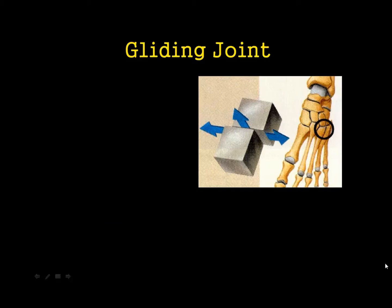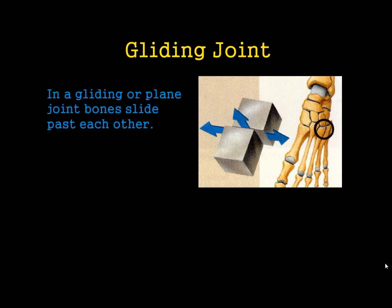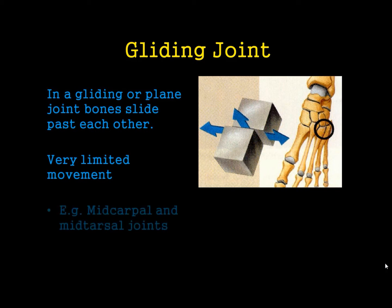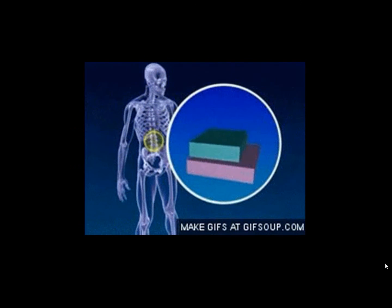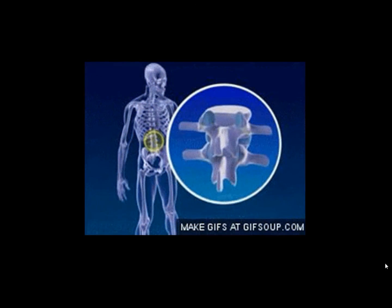We also have the gliding joint. The gliding joint is literally where the two surfaces of the bone just rub over each other. There are no particular bony features that make up the joint — they literally just rub over each other. This is where you have very, very limited movement, and it's quite often found in the mid-carpal and mid-tarsal joints in the hands and the feet. The bone surfaces just move over each other rather than in a particular articulation.